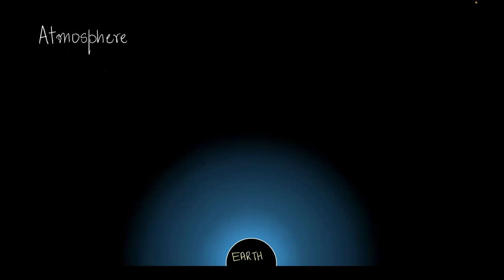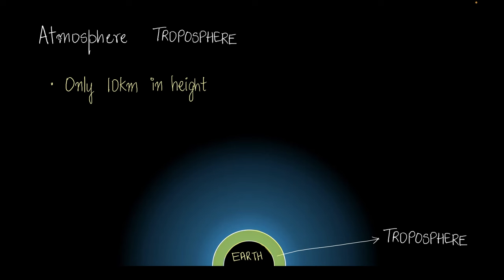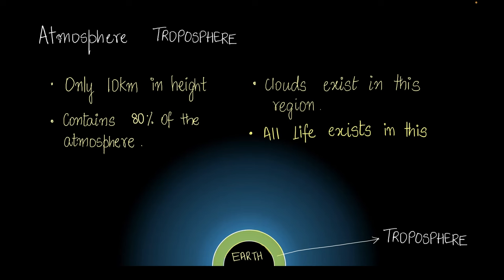The layer of the atmosphere closest to the earth is called the troposphere. The troposphere is only 10 kilometers in height — very thin compared to the total height of 10,000 kilometers. Interestingly, 80% of the air in the atmosphere is in this layer, along with all the clouds and all living things — birds, microorganisms — mostly in this layer.